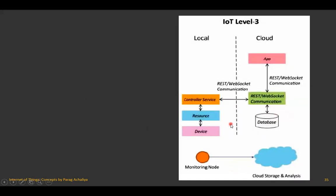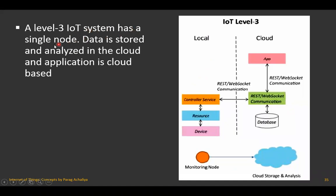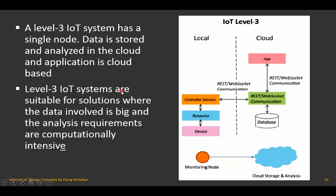This is level three. A level three IoT system has a single node; data is stored and analyzed in the cloud, and the application is cloud-based — similar to level two. Level three IoT systems are suitable for solutions where data involved is big and analysis requirements are computationally intensive, requiring both big data storage and intensive big data analysis in the cloud.